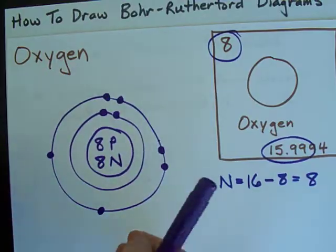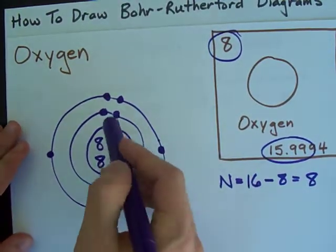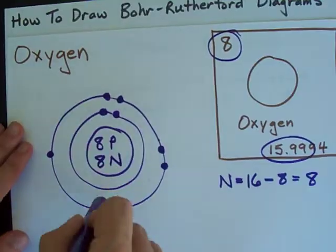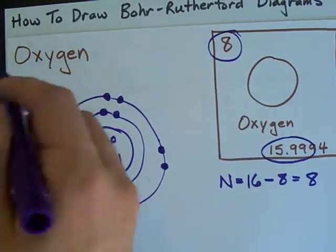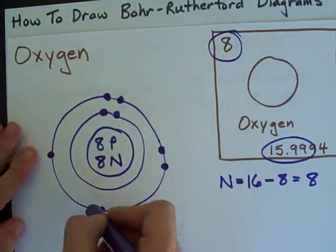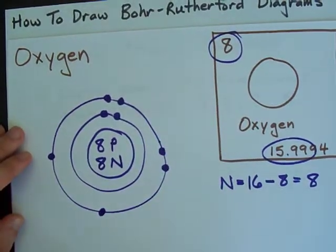This is my Bohr-Rutherford Diagram for Oxygen. Notice that I put electrons individually for the first 4, and then doubled it up. That's just a convention that we have for Bohr-Rutherford Diagrams.